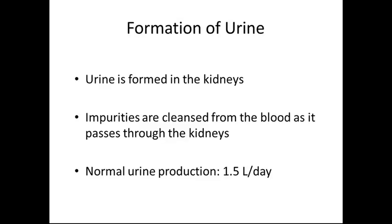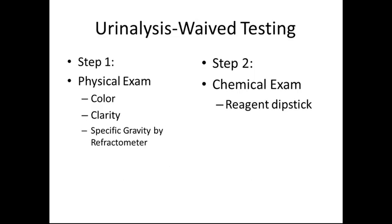The formation of urine: urine is formed in the kidneys. Impurities are cleansed from the blood as it passes through the kidneys. Normal urine production is 1.5 liters per day. Urinalysis, or urine testing, includes the physical and the chemical examination.